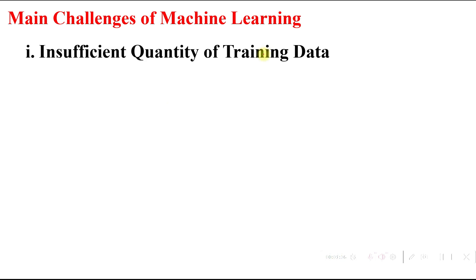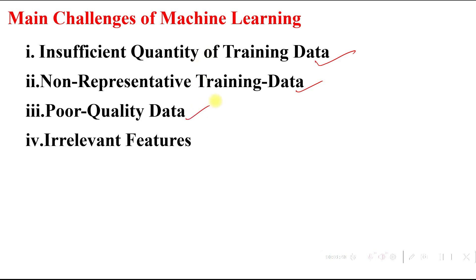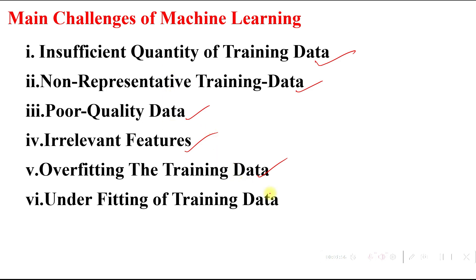The main challenges of machine learning algorithms are: insufficient quantity of training data, non-representative training data, poor quality data, irrelevant features of the dataset, overfitting the training data, and underfitting the training data.